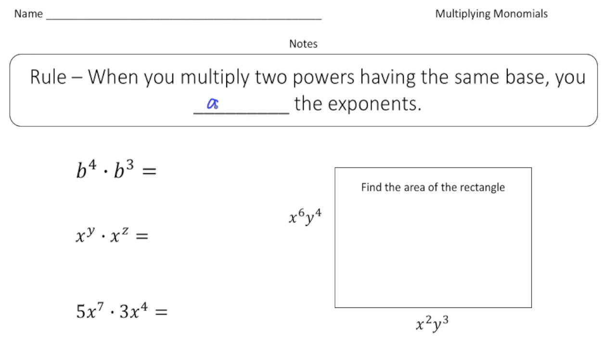Down here there's a good example. We have b to the fourth times b to the third, so the bases are both b's. So the rule is you add the exponents, so this would equal b to the four plus third power, which really equals b to the seventh power.